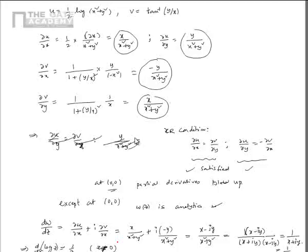To summarize: we have seen complex functions including exponential, logarithm, sine and cosine. We have seen the CR conditions and why they are the necessary and sufficient conditions for a function to possess a derivative. A function that possesses a derivative at all points is called analytic, and where it doesn't possess a derivative is called a singular point.